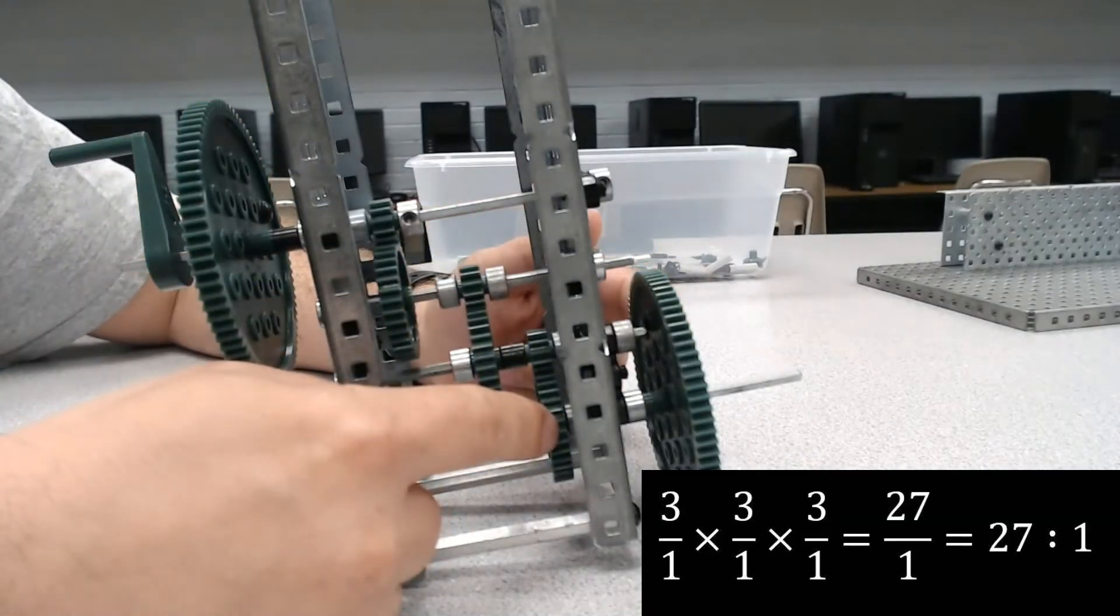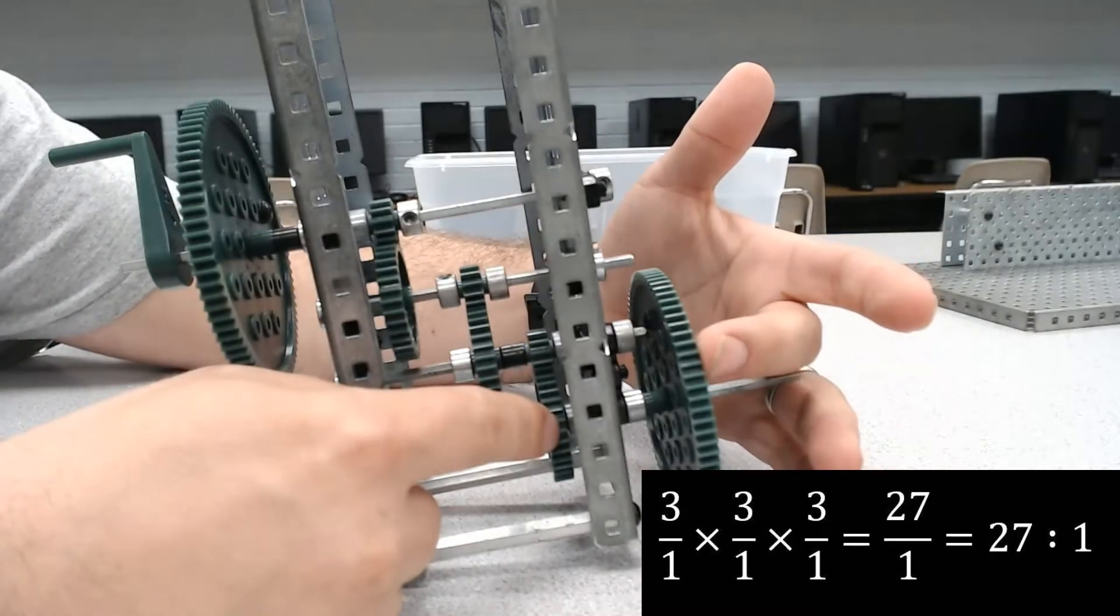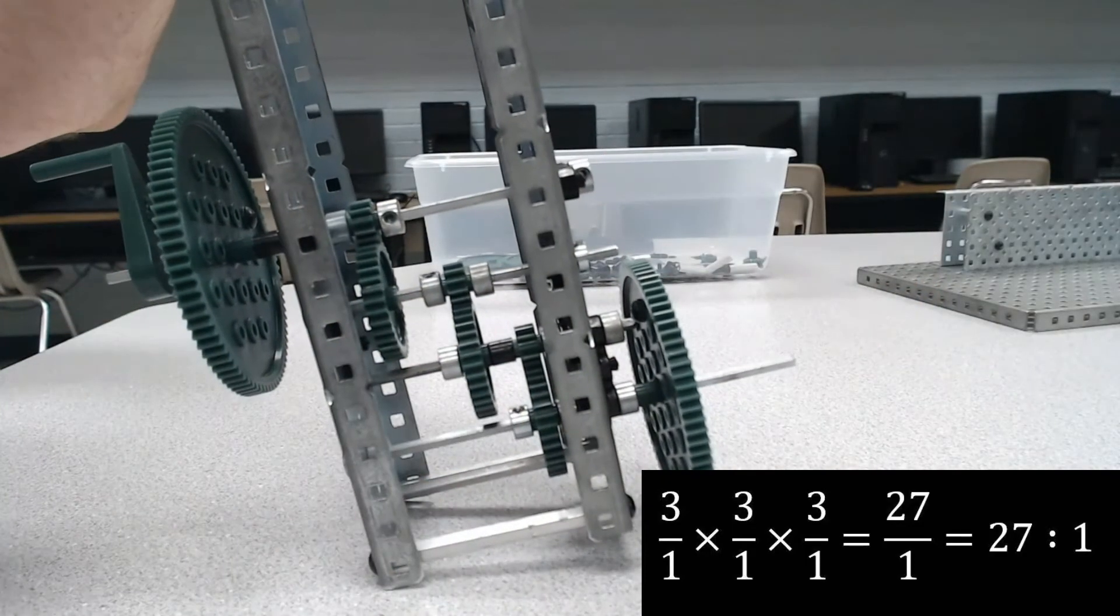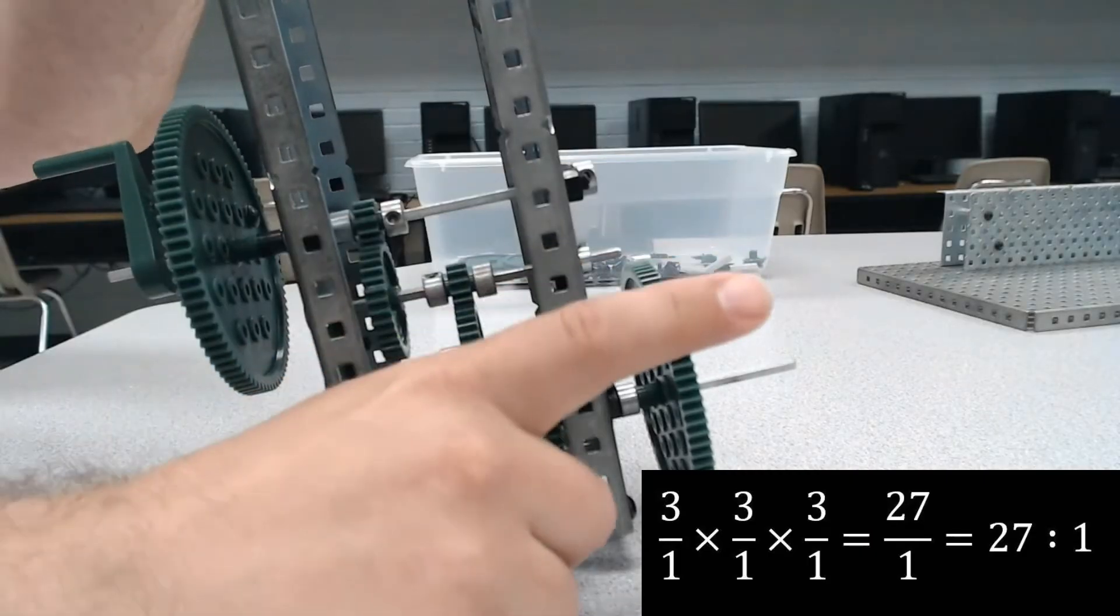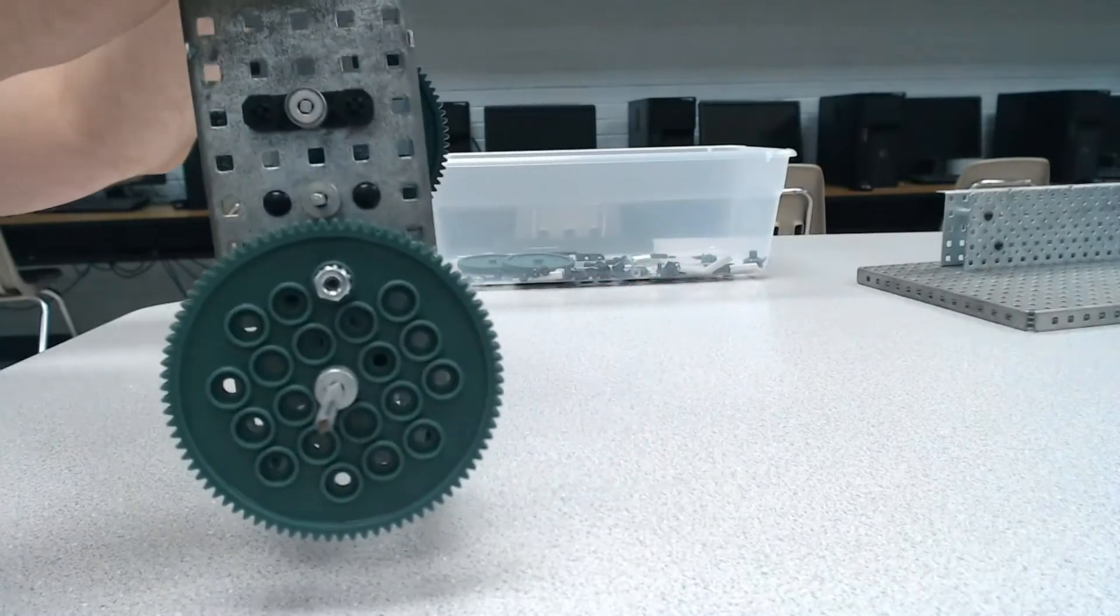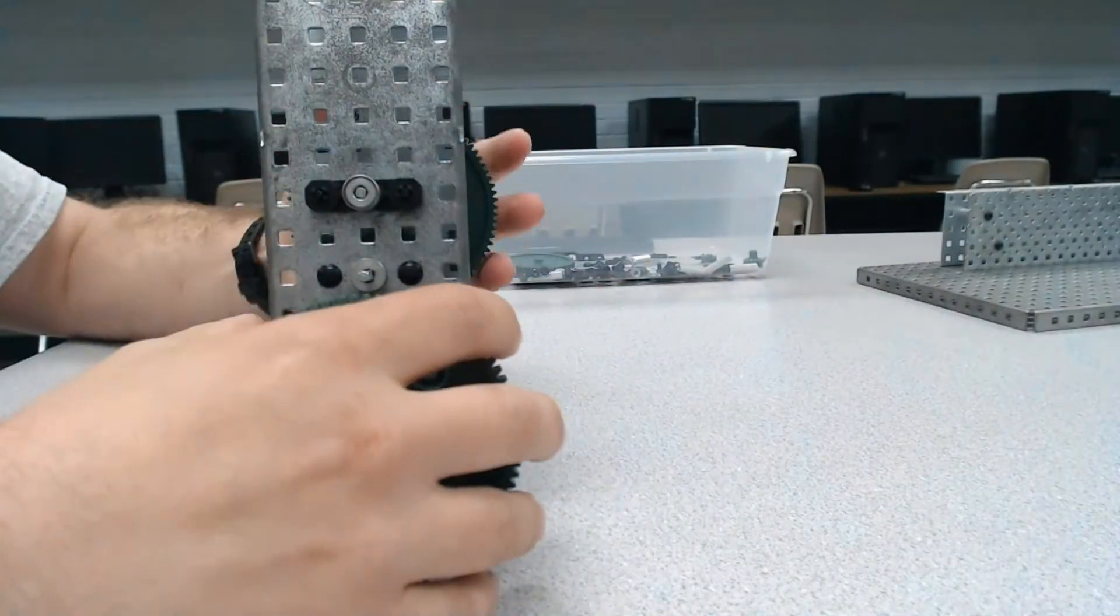Since this is connected to the other 84-tooth, they're at a one-to-one ratio. So 27 turns here to get one turn out of this gear. We can kind of see that if we look here.